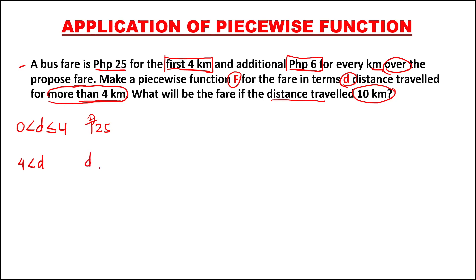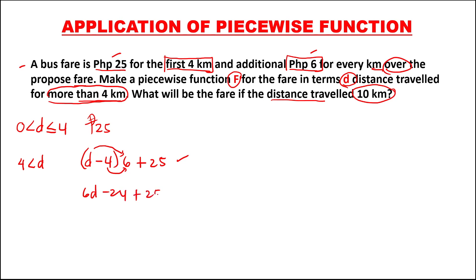If the distance traveled is, for example, 7 minus 4, that gives 3, and 3 times the additional charge of 6, plus the regular fare of 25 pesos. To simplify: multiply to get 6D, then negative 4 times 6 is negative 24, plus 25, which gives plus 1. So this is the equation for distance traveled more than 4 kilometers.